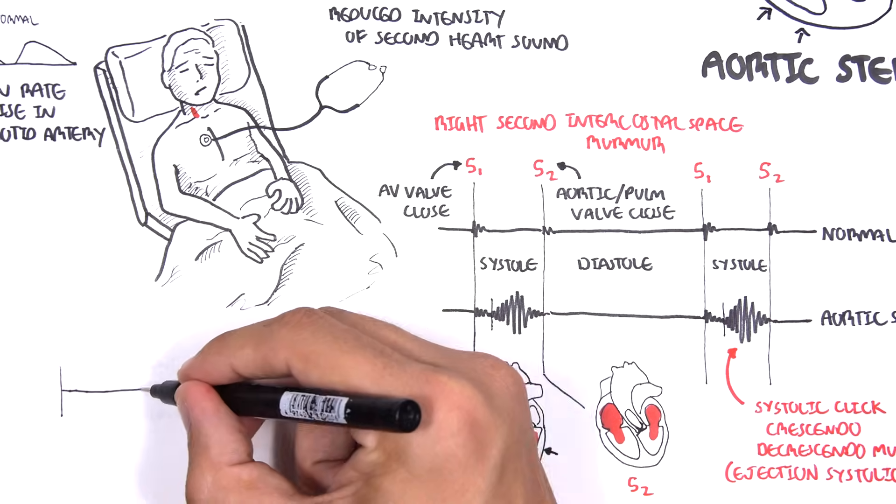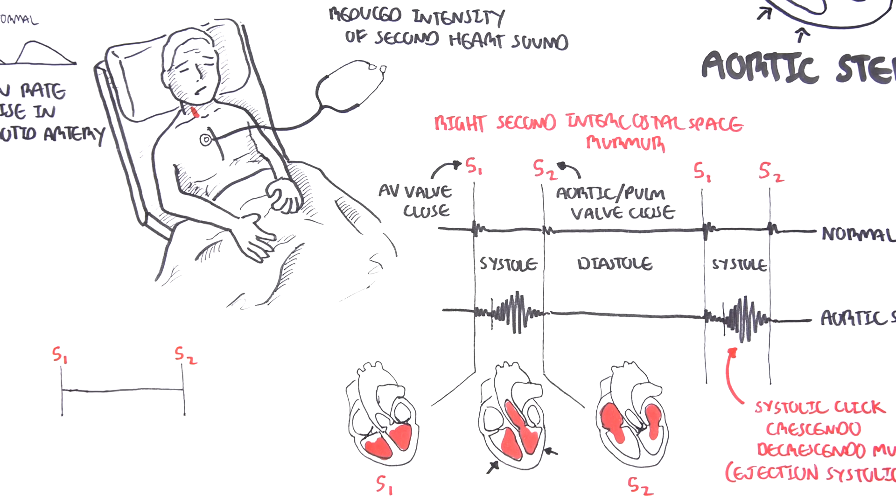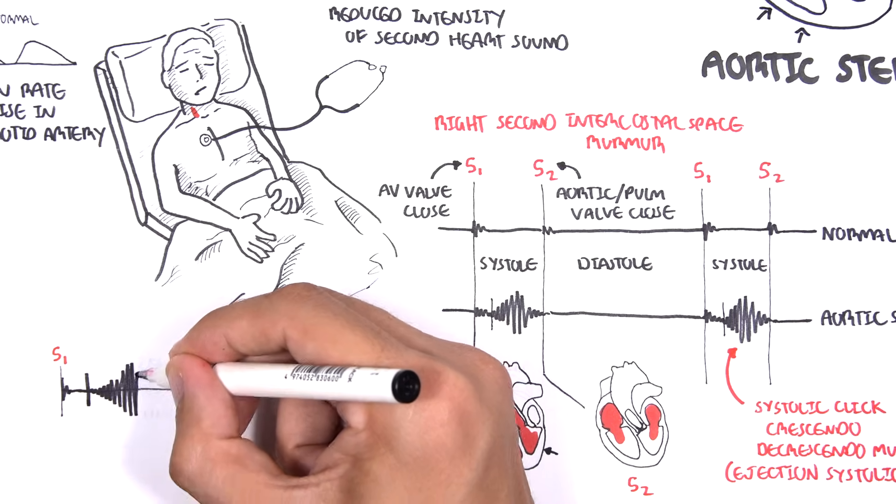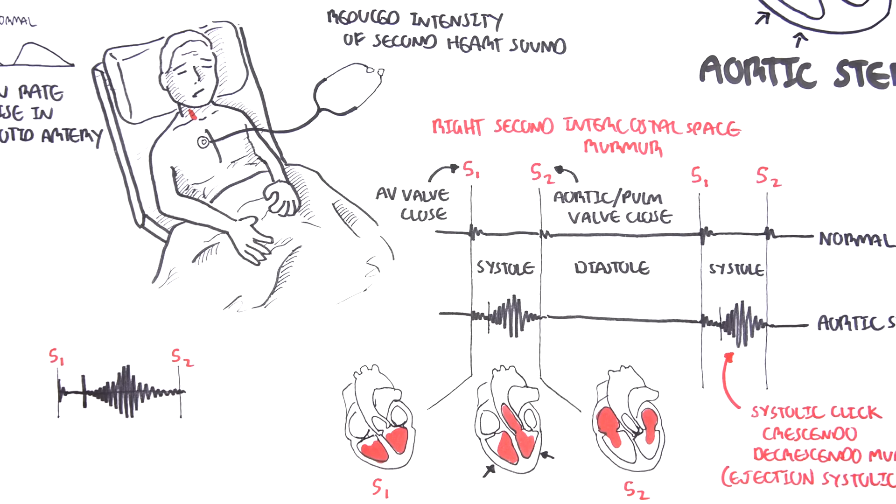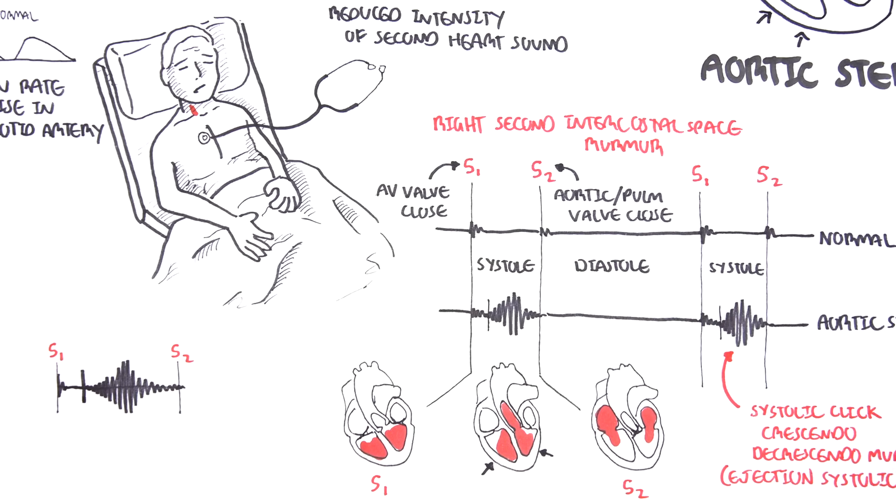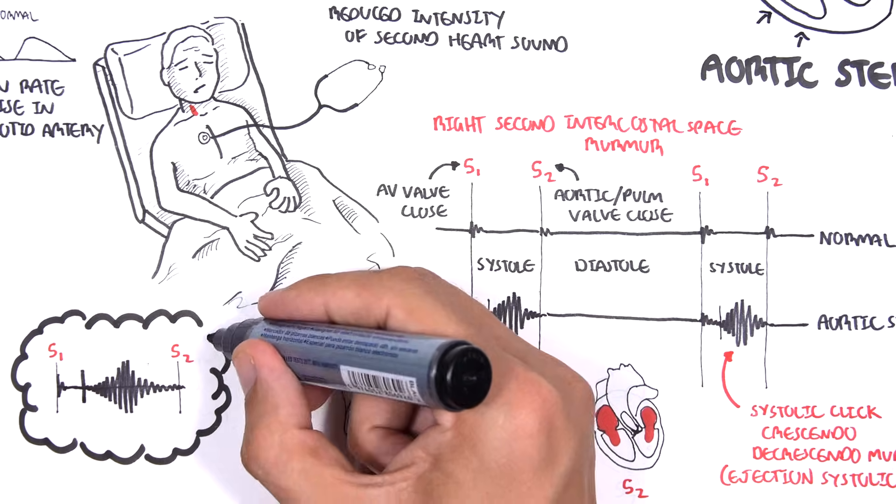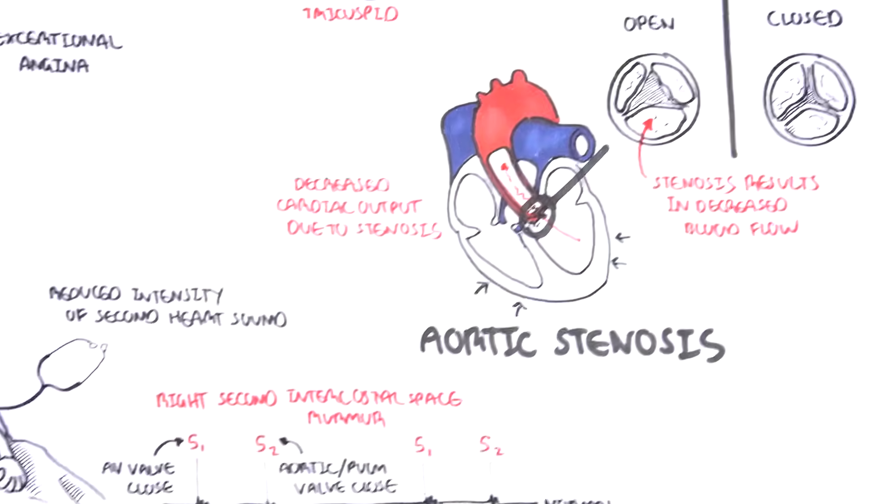Again, the AV valve closes, ejection click as the aortic valve opens, turbulence through the aortic valve increases then decreases, and then the aortic valve closes. It is important to know that this murmur can radiate to the carotids.